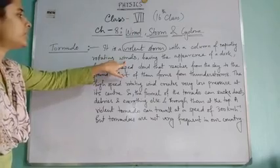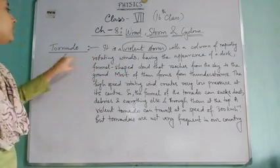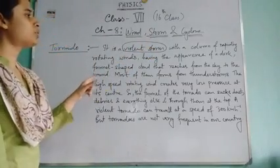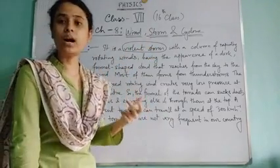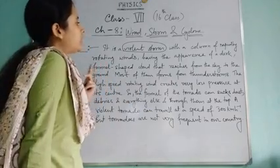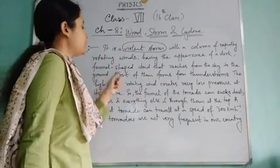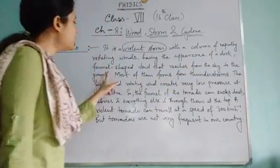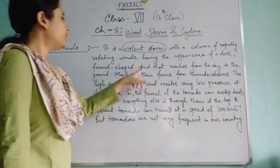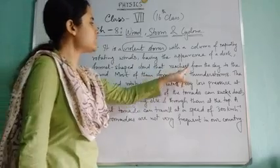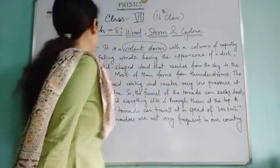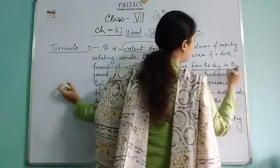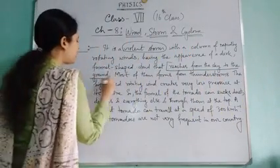You can find the similarity between the tornado and the cyclone — in both types of storms, we have a column of rapidly rotating wind, having the appearance of a dark funnel-shaped cloud that reaches from the sky to the ground.